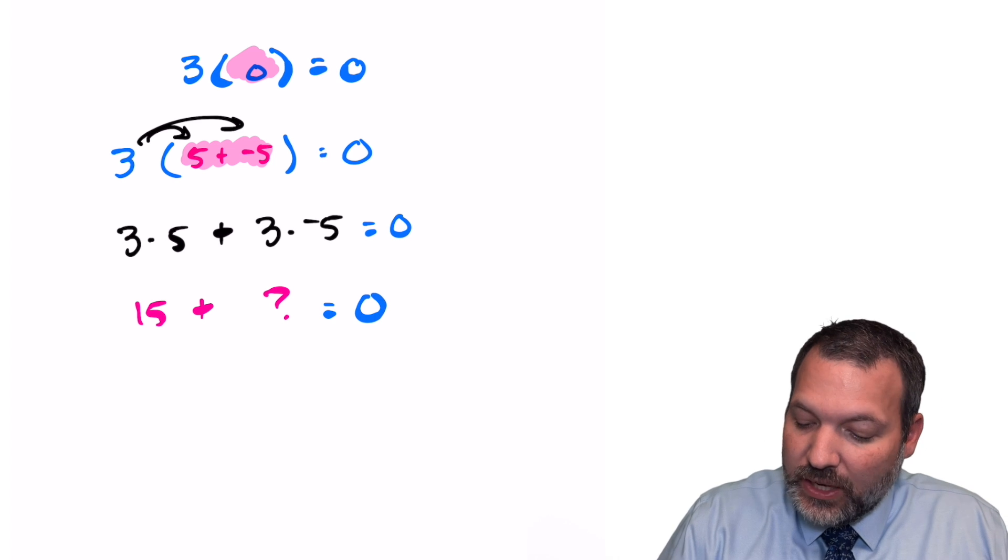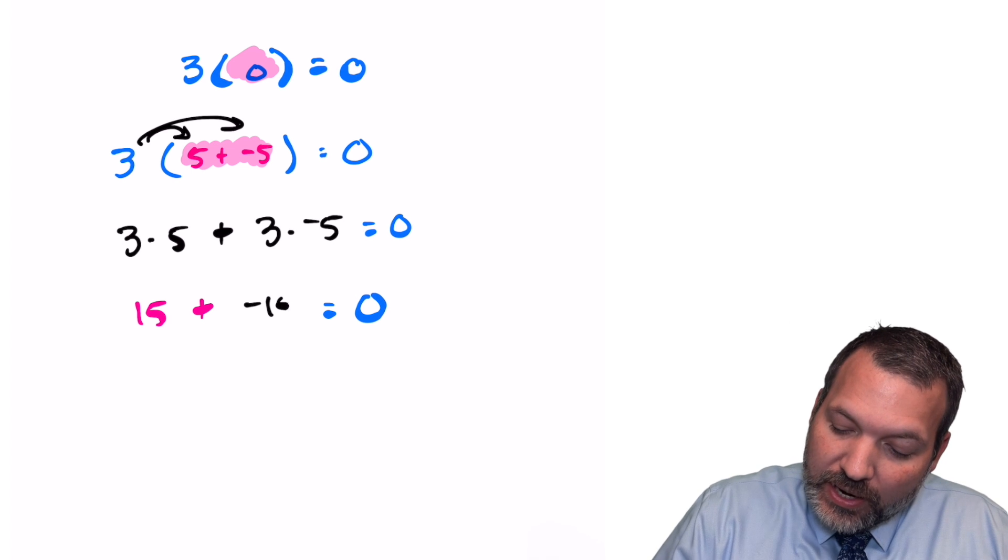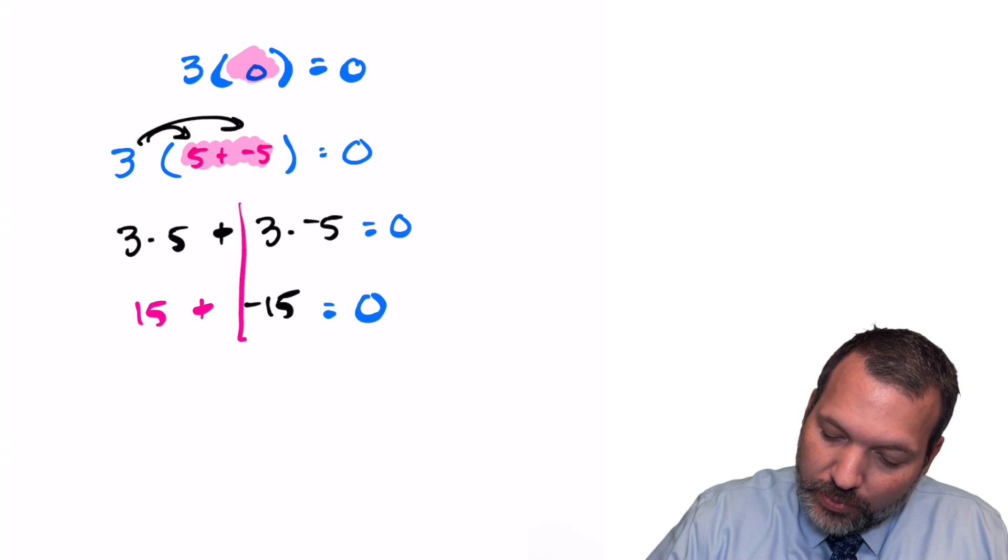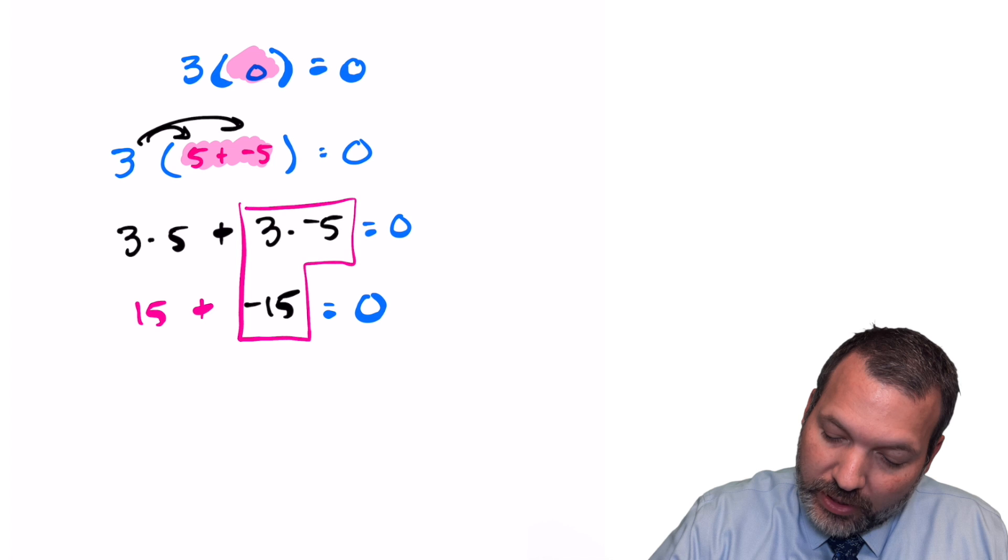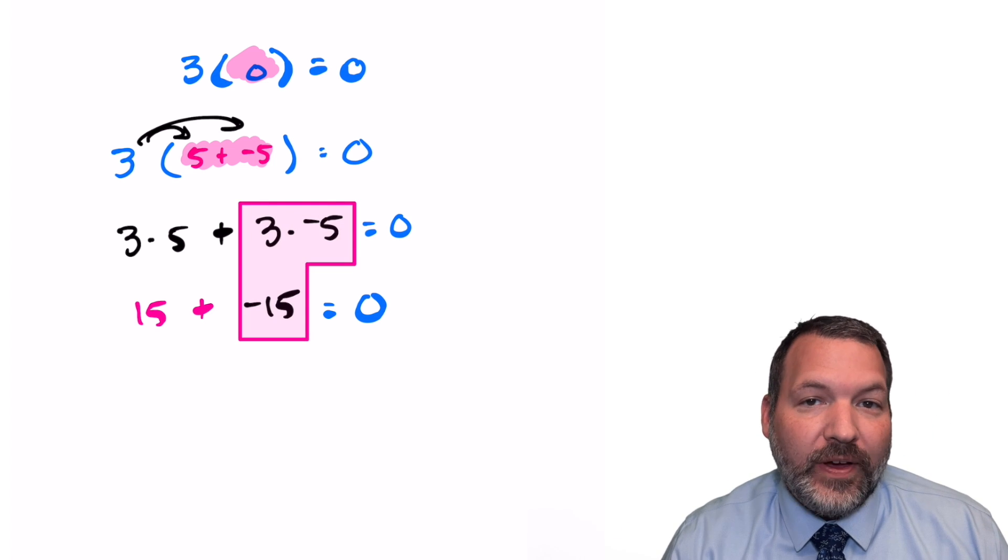What plus 15 would make a zero? The additive inverse of 15. In other words, negative 15. And so it should be the case that these two quantities, three times negative five and negative 15 itself, are actually the same value.